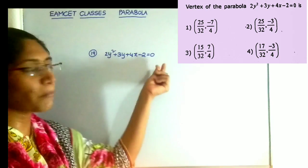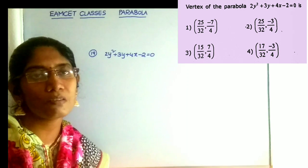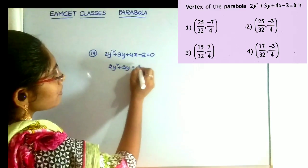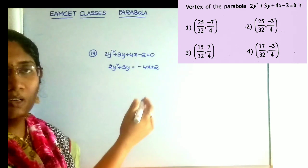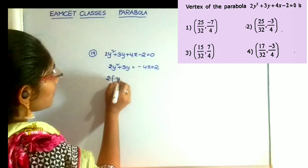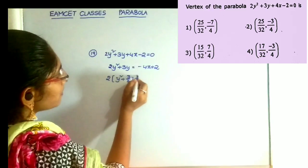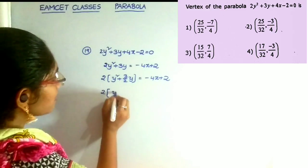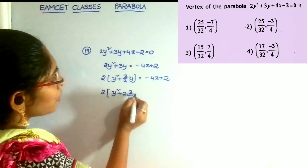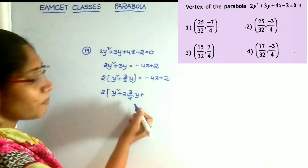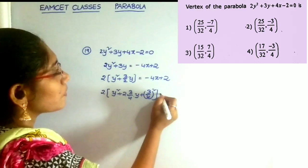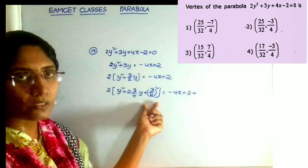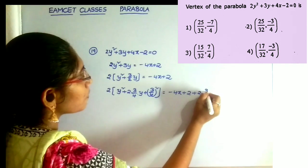Next question: the vertex of the parabola 2y squared plus 3y plus 4x minus 2 is equal to 0. We want the vertex value. First we write the equation as 2y squared plus 3y is equal to minus 4x plus 2. Taking 2 as common from the left-hand side, we get 2 into y squared plus 3y over 2 is equal to minus 4x plus 2. To make a perfect square on the left, we add 2 into 3/4 whole squared to both sides.